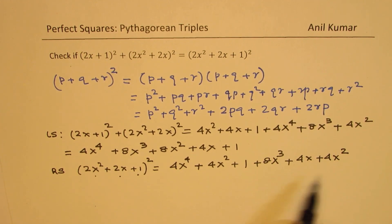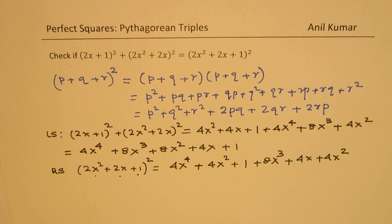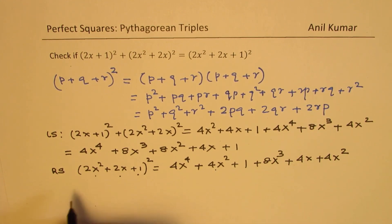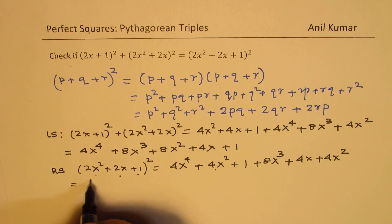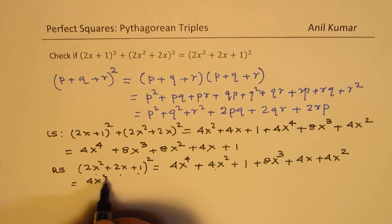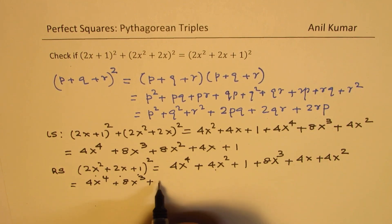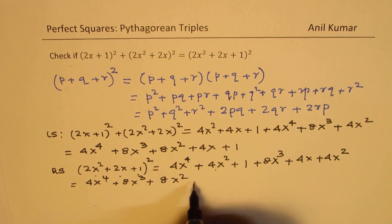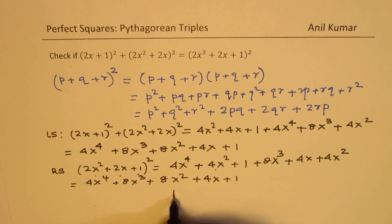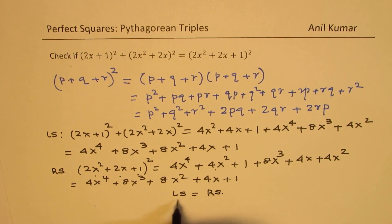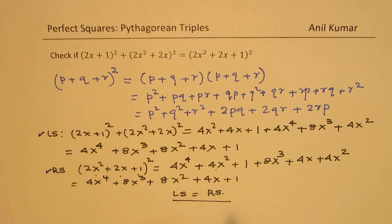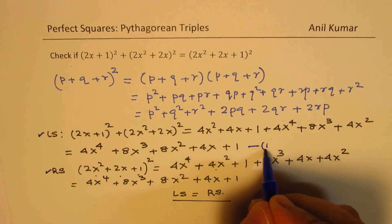Continuing the right side: the twice-product terms are 2×(2x²)(2x) = 8x³, 2×(2x)(1) = 4x, and 2×(2x²)(1) = 4x². Combining all six terms: 4x⁴ + 8x³ + 4x² + 4x² + 4x + 1 = 4x⁴ + 8x³ + 8x² + 4x + 1. The left side equals the right side, so a² + b² = c² is confirmed.